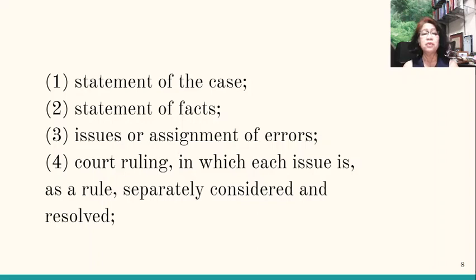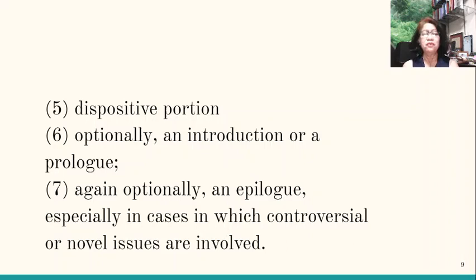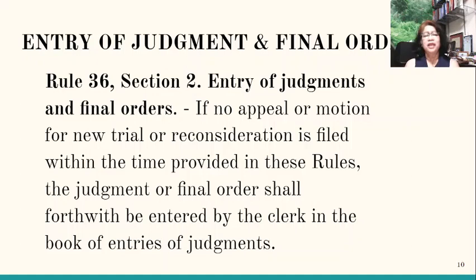Number three, there must be issues or assignment of errors. Number four, the court ruling, in which each issue is separately considered and resolved as a rule. Number five, there must be a dispositive portion. Number six, there must be an introduction or prologue, but this is not mandatory — it is used when the case is complicated or controversial. And number seven, also optionally, there must be an epilogue, especially in cases in which controversial or novel issues are involved.